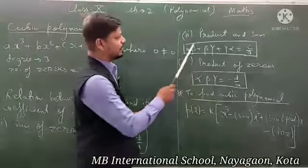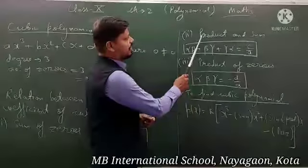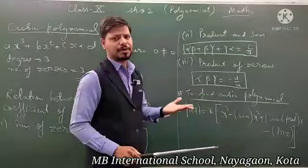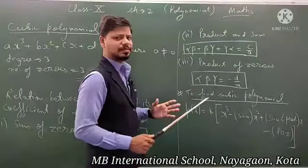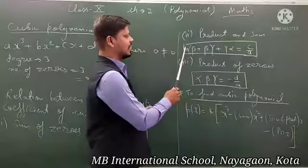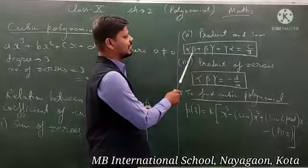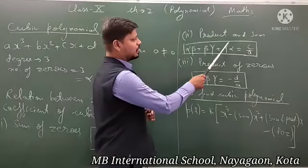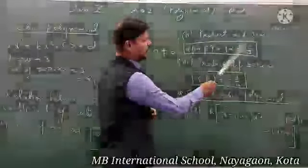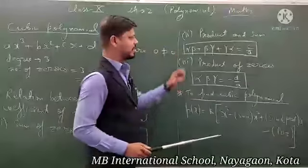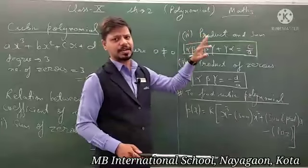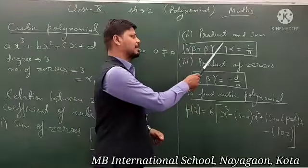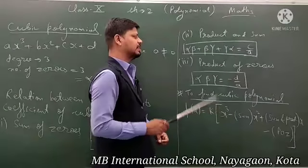Now the second relation hume jo padhna hai woh hai product and sum, isko sum over product bhi bolte hain. That is: alpha × beta + beta × gamma + gamma × alpha = c/a. Yeh relation bhi important hai — product and sum correlation, that is αβ + βγ + γα = c/a.